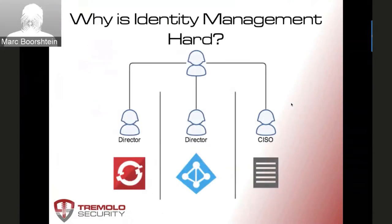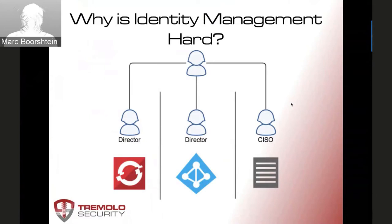So why is this so hard? Identity management is not new — this is not a new concept. Back from timesharing, whenever multiple people had to sit down at a computer, you had to figure out who was who. There are technical aspects: things just need to be able to talk to each other, which isn't always easy. It's 2017 and I still often hear people say, 'I want an API on top of LDAP,' even though LDAP hasn't changed in 20-something years. So there are technology issues.